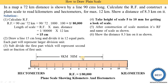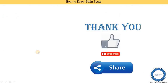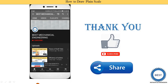If asked to indicate a different distance, such as 9.5 kilometers, simply change the points: 9 kilometers and 5 hectometers. Thank you for watching. If you learned something, please like the video and subscribe to the channel for more videos on engineering graphics and other mechanical engineering subjects, and don't forget to share with your friends.